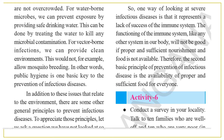In addition to environmental issues, there are some other general principles to prevent infectious diseases. One way of looking at severe infectious disease is that it represents a lack of success of the immune system. This is why COVID-19 is infecting many people of older and middle ages — because their immune system is low. The functioning of the immune system, like any other system in our body, will not be good if proper and sufficient nourishment and food is not available. Therefore, the second basic principle of prevention of infectious disease is the availability of proper and sufficient food for everyone.